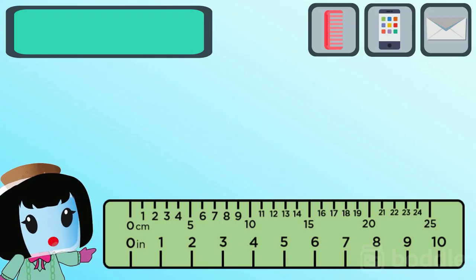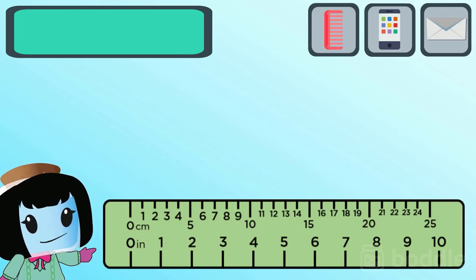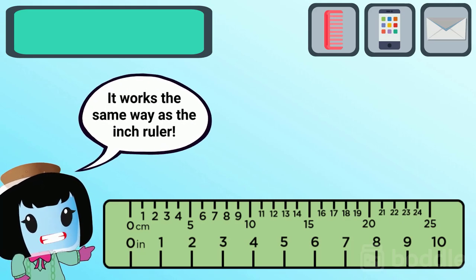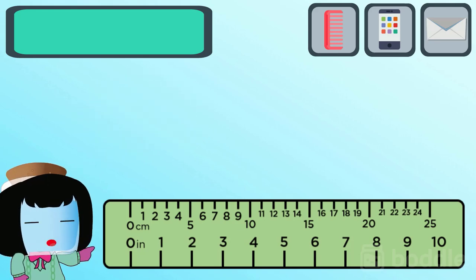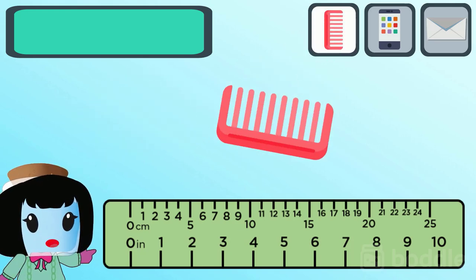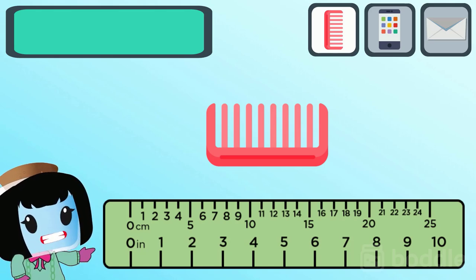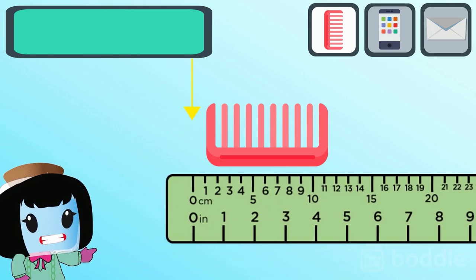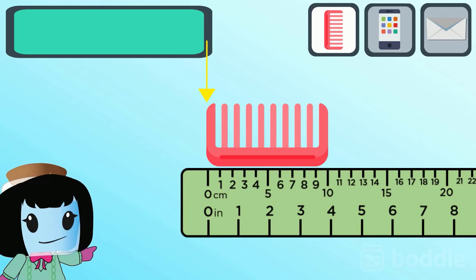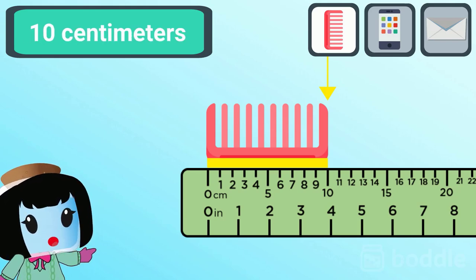Let's practice using the centimeter side of the ruler. The unit changed, but it works the same as the inch ruler. How long is this comb in centimeters? For an accurate measurement, place the zero marker across the left edge of the comb. The right edge is across the number 10, so it looks like the comb measures 10 centimeters.